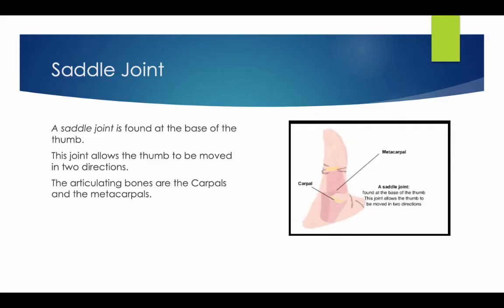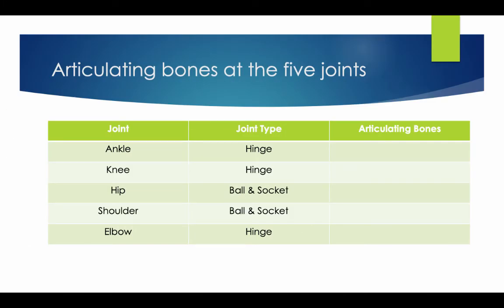As you can see from this video, as the thumb moves up and down, it allows movement in both directions. Pause the video and try to fill in the table showing the articulating bones at the five different joints.